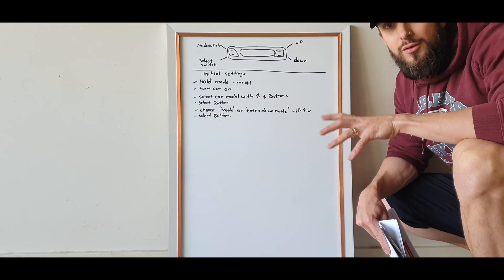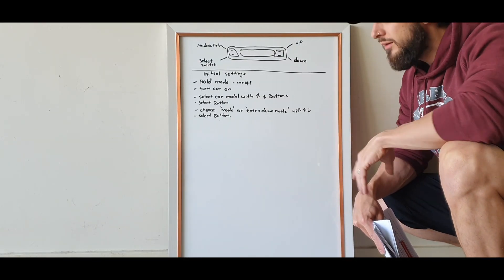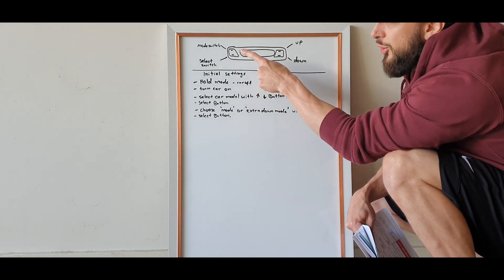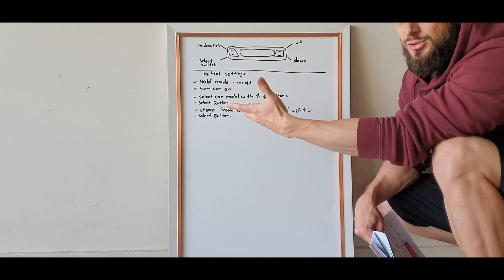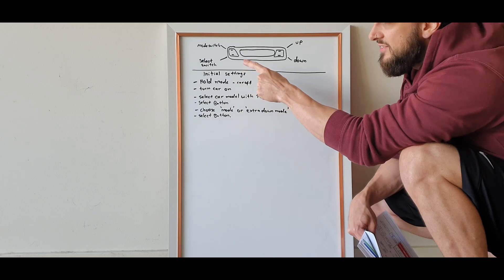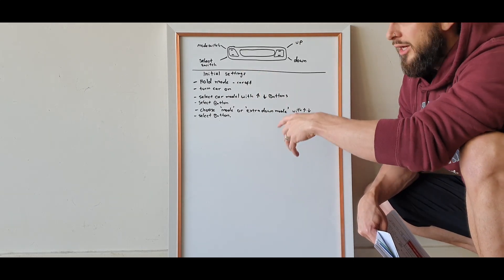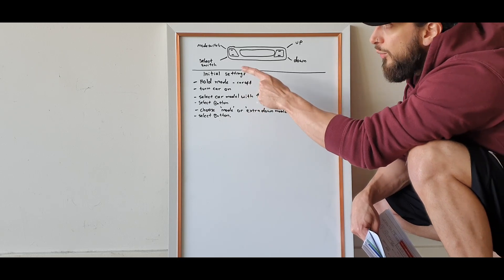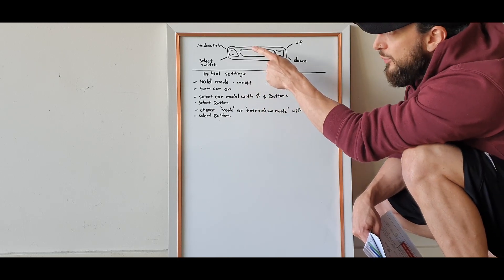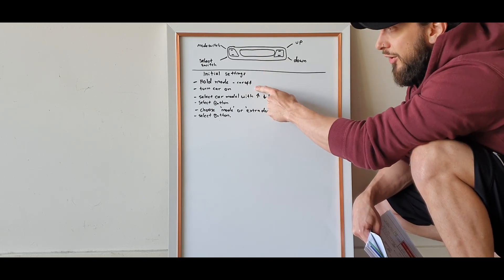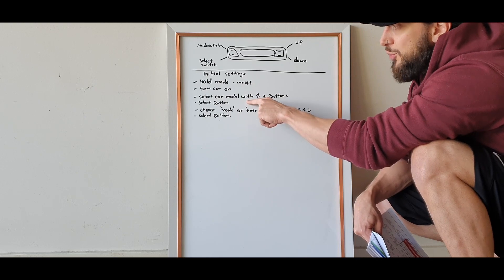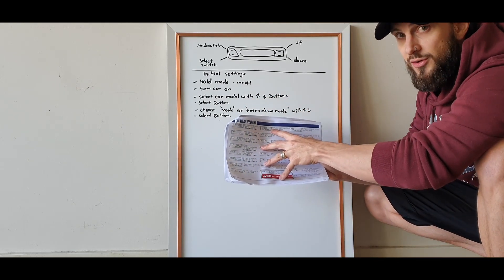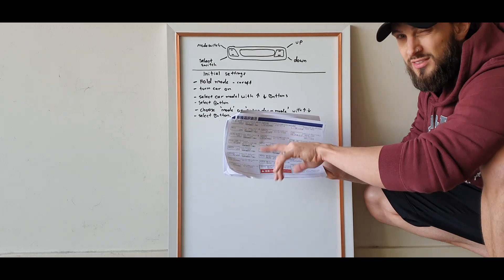To give you a quick rundown of the actual controller: you've got your scrolling buttons here which are up and down, then you've got your mode switch which changes modes, and a select switch which is like your enter button. To set up initially, you're going to have the car up, hold down your mode switch button, and then turn the car on.